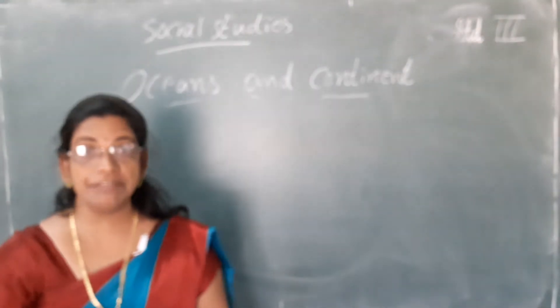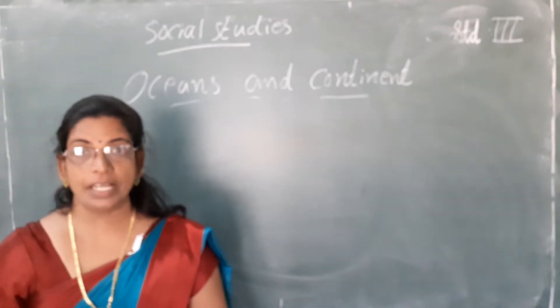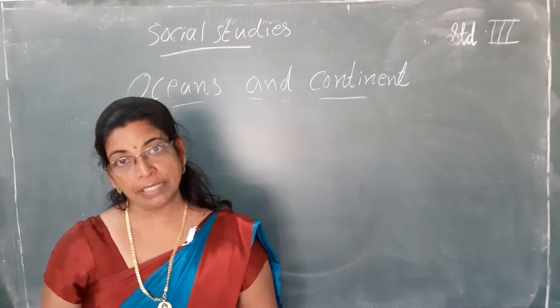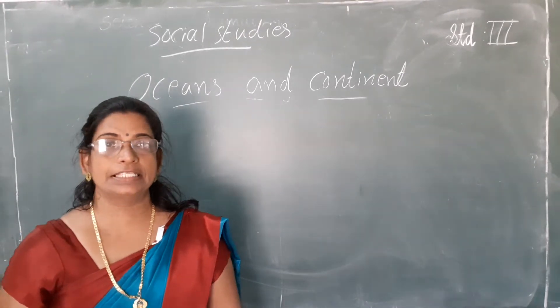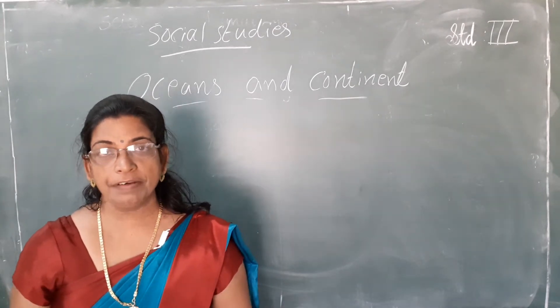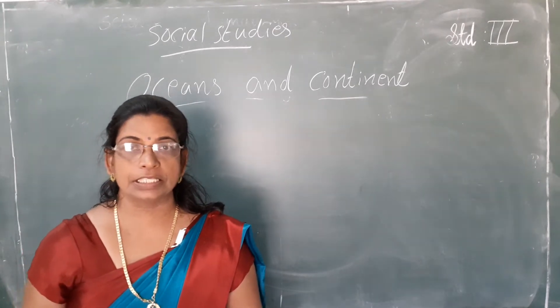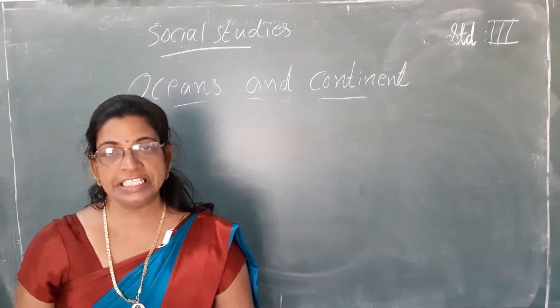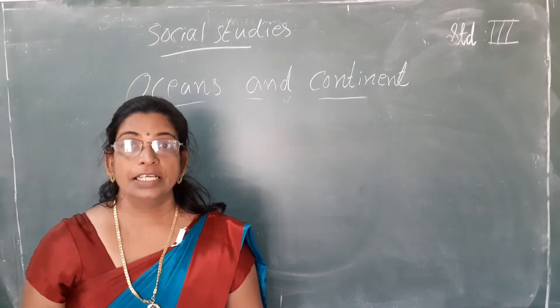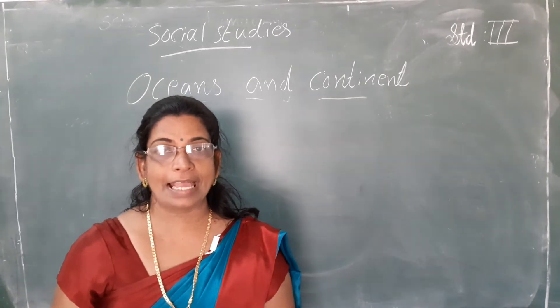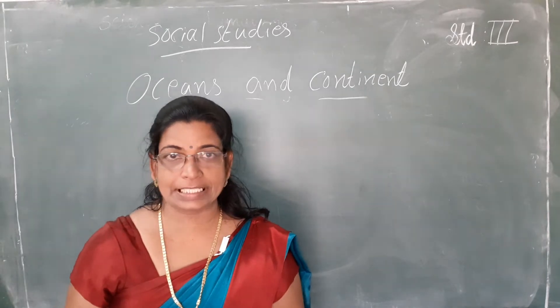Previously we learnt what is solar system, how many planets are there in the solar system, and even the names of them. We learnt what is a solar system, what is an orbit, what is horizon — everything. I hope you are reading the textbook daily and preparing it, and again this week I am coming with the second lesson: Oceans and Continents.